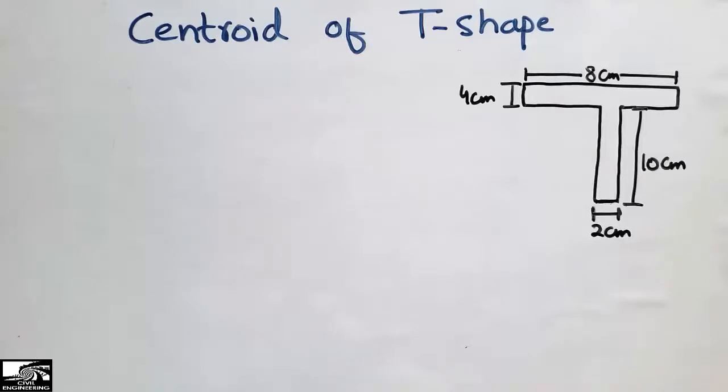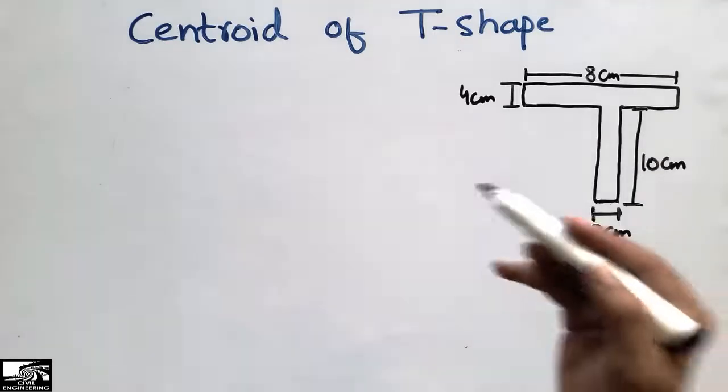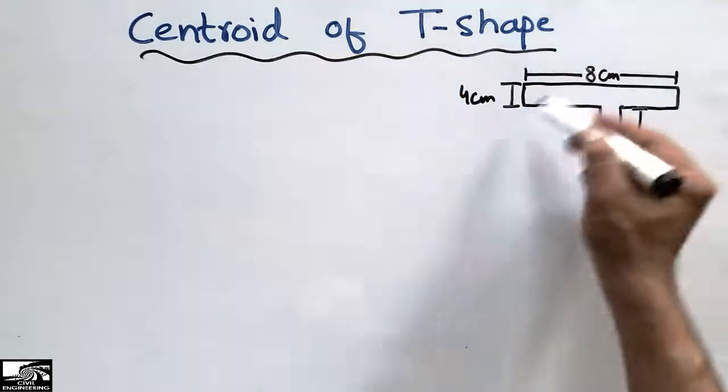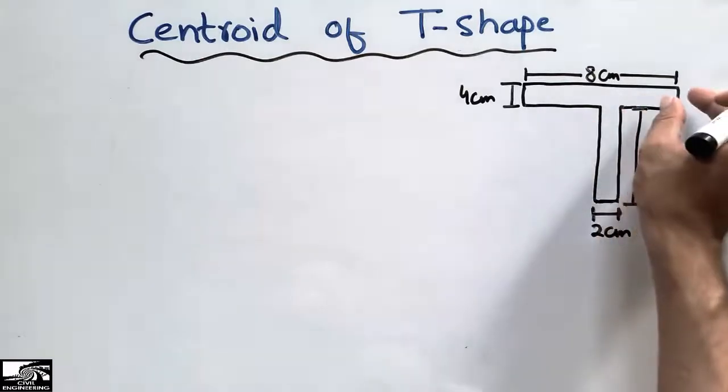Hello guys, welcome back to the C1 Engineering YouTube channel. Please subscribe our channel for more videos. Today our topic is about finding the centroid of the T-shape. This is a T-shape, you can see the flange at the top.